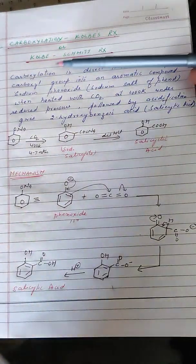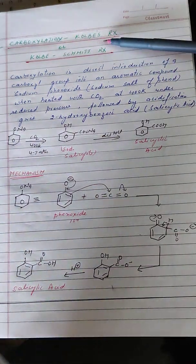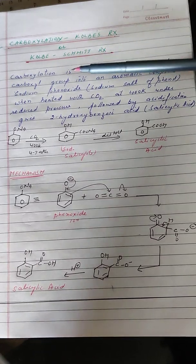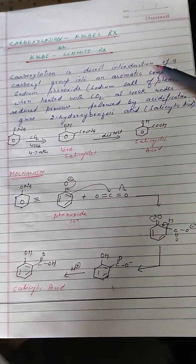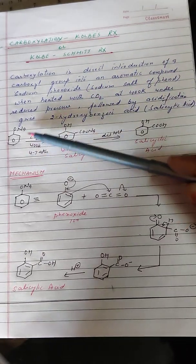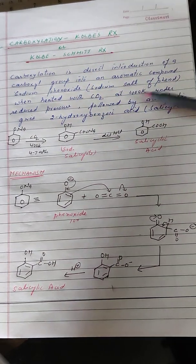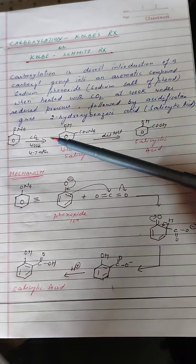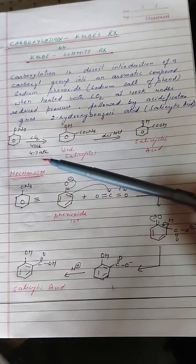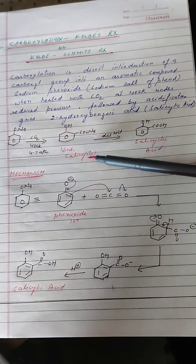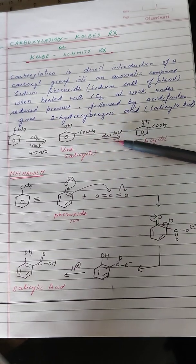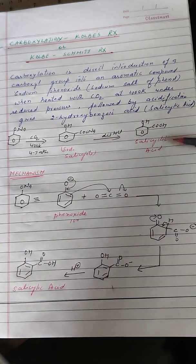Next we have the carboxylation reaction, also known as the Kolbe reaction or Kolbe-Schmidt reaction. Carboxylation is a direct introduction of a carboxyl group into an aromatic compound. Sodium phenoxide — the sodium salt of phenol — when heated with carbon dioxide at 400 K at a reduced pressure of 4 to 7 atmospheres, results in the formation of the sodium salt of salicylic acid, which on acidification yields salicylic acid.